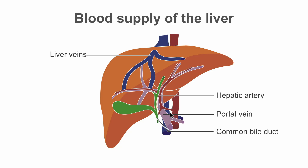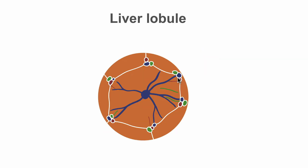The liver has a dual blood supply: the arterial supply from the hepatic artery coming from the aorta, and the portal vein bringing blood from the gastrointestinal tract to be cleared. The underlying structure of the liver is the liver lobule.